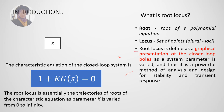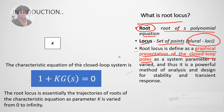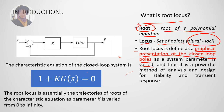So what is root locus? By words, 'root' means the root of an S polynomial equation, and 'locus' means a set of paths of points. By definition, the root locus is defined as a graphical presentation of the closed-loop poles as the system parameter — in this case, the gain K — is varied.